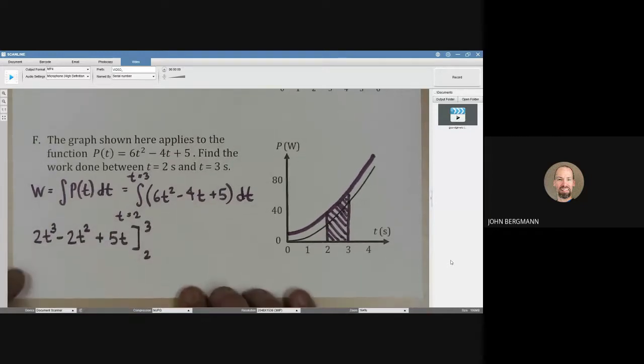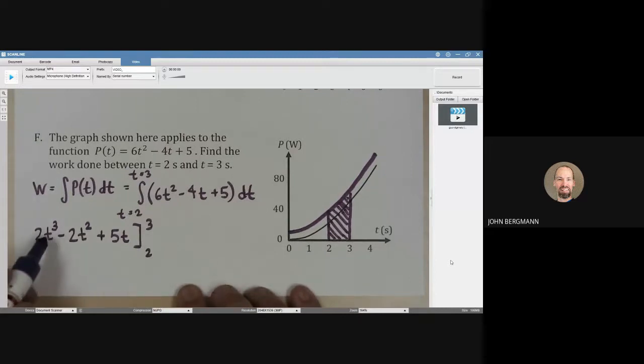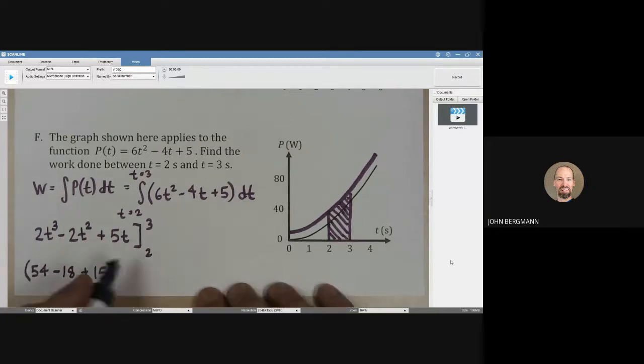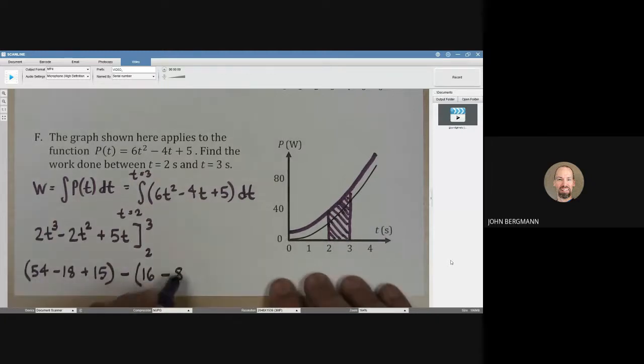So let's put this in and see what we get. If we put a 3 in here, 3 cubed is 27, so that's going to be 54. I'll put a set of parentheses here. Minus 3 squared is 9, so that's going to be minus 18 plus 5 times 3 is 15. So that's at our upper limit. And then the lower limit, if we put a 2 in here, 2 cubed is 8 times 2 is 16 minus 8 plus 10.